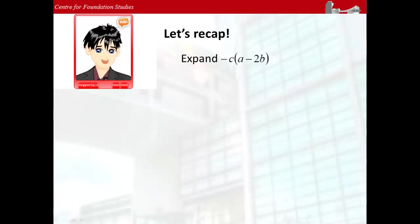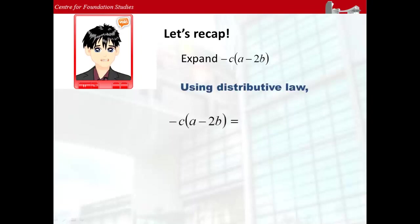We shall recap on expanding of a term into a bracket. Using the distributive law, negative c multiplied to a results in negative ac. Negative c multiplied to negative 2b gives positive 2bc. And the expanded expression is negative ac plus 2bc.